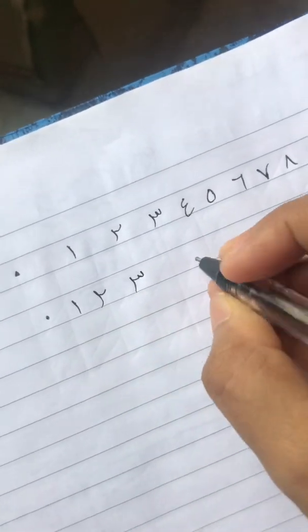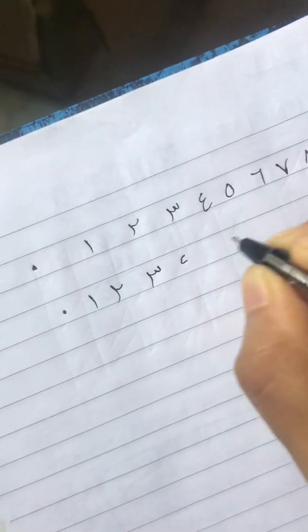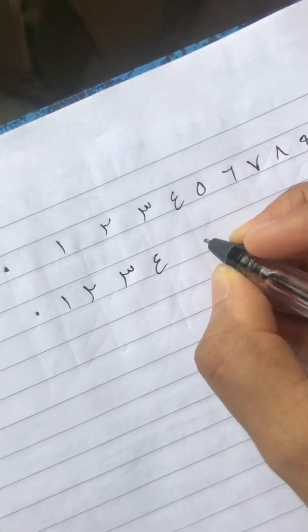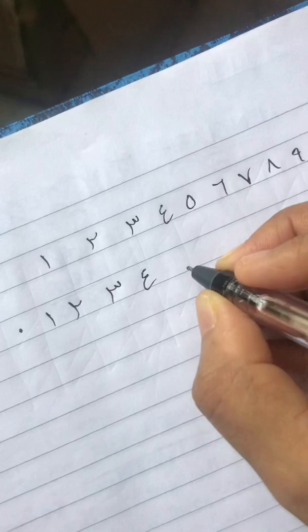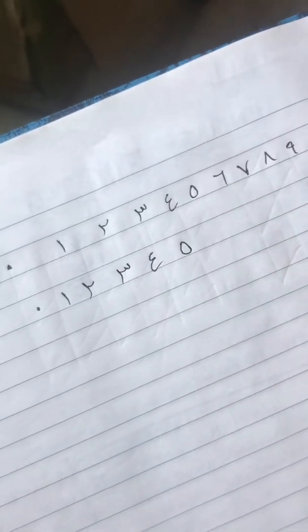Now we go to thalatha, which is three. Just have to put two curves and then put a line. Now arba, four, just have to put one small C and then you have a big C.